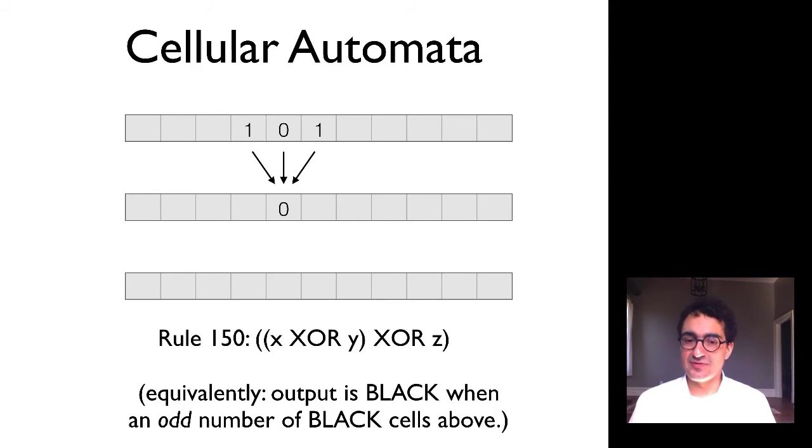It's an exclusive or. So if both are off it's off, if both are on it's off, and if one is on and the other is off then it's on. Another way to talk about rule 150, another way to verbally describe that function f is not in terms of gates but just the same words: the output is black when there's an odd number of black cells above.